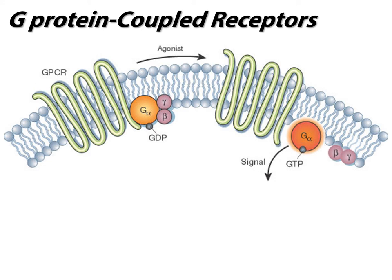Once a GPCR binds its ligand - called an agonist, meaning an activator - it activates the G protein. The G protein swaps out GDP for GTP: in its inactive form it has GDP, it releases that GDP, binds a GTP, releases its inhibitory subunits, and goes on to send a signal. So the receptor triggers a conformational shift, forces release of GDP, it binds GTP, releases the inhibitory subunit proteins, and now this G protein can go out and perform second message signaling.